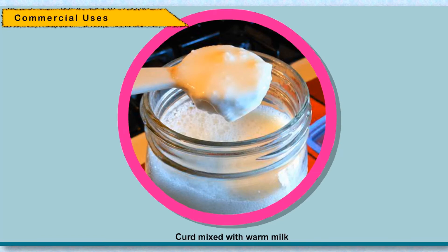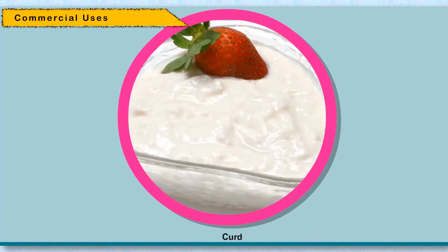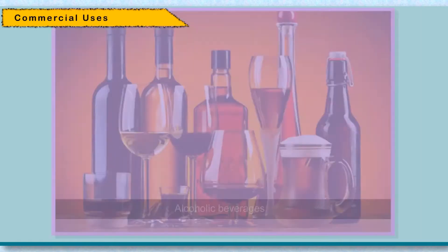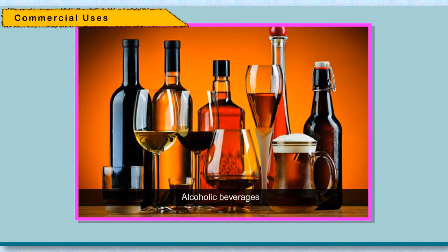Making curd and cheese: When a small amount of curd is mixed into warm milk and kept aside for a few hours, the milk changes into curd. This happens because curd contains a bacterium called Lactobacillus. Lactobacillus bacteria multiply in the milk and coagulate it to form curd. The production of cheese and paneer also involves bacteria such as Lactobacillus and Streptococcus.